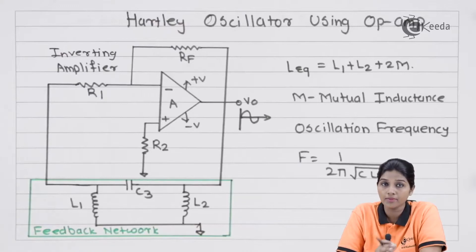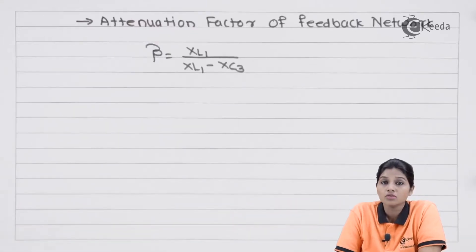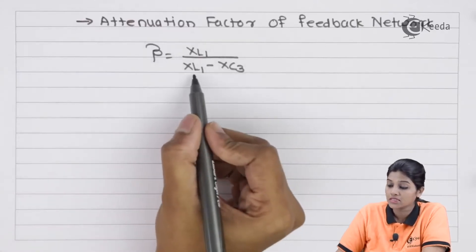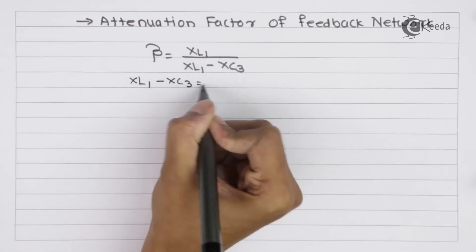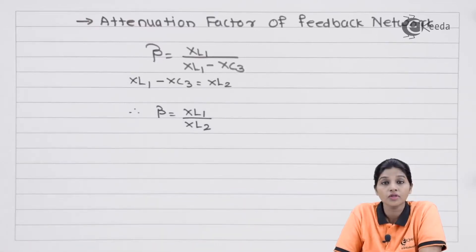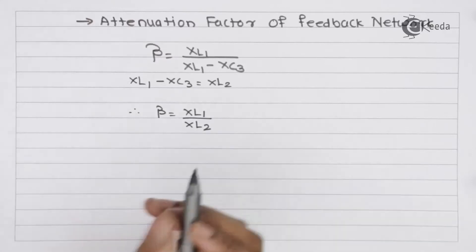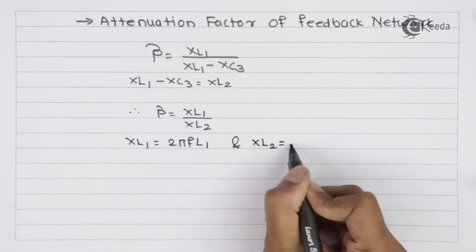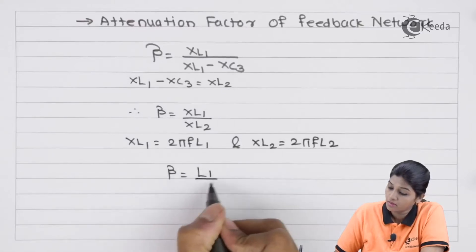When we consider the feedback network, we need to consider the feedback factor β. The feedback factor is given by β = XL1 / (XL1 − XL3). To have a total phase shift of 0 or 360 degrees, XL1 − XL3 = XL2, so substituting this gives β = XL1 / XL2. Since the reactance of an inductance is given by 2πfL, we have XL1 = 2πfL1 and XL2 = 2πfL2. Substituting these values gives β = L1 / L2.